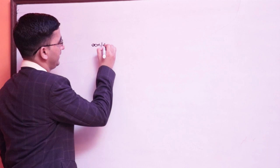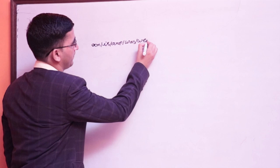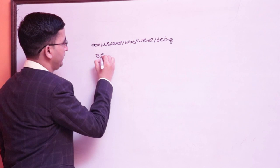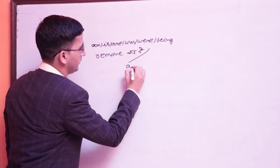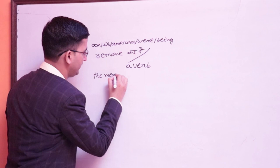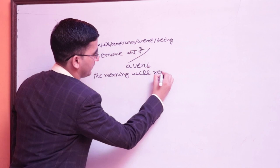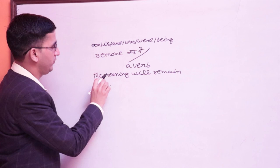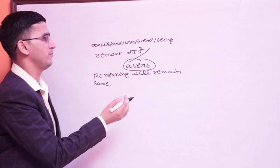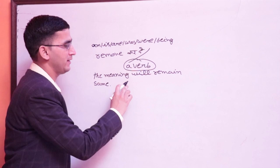Here is something interesting: if we remove am, is, are, was, were, or being from a passive voice sentence and replace them with just one special verb, the meaning will remain the same. I will answer this question in my next video — till then, keep thinking about what that verb might be.